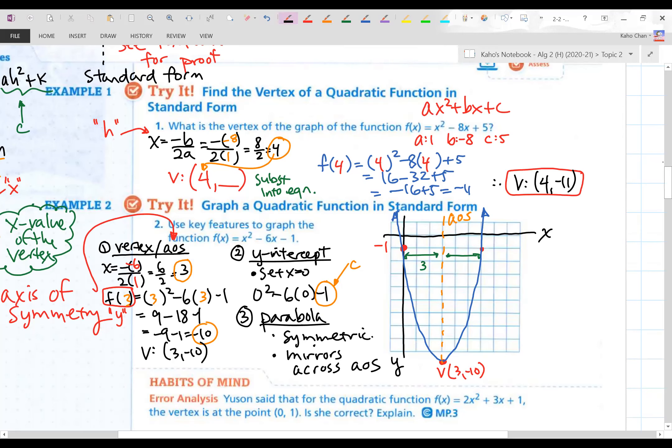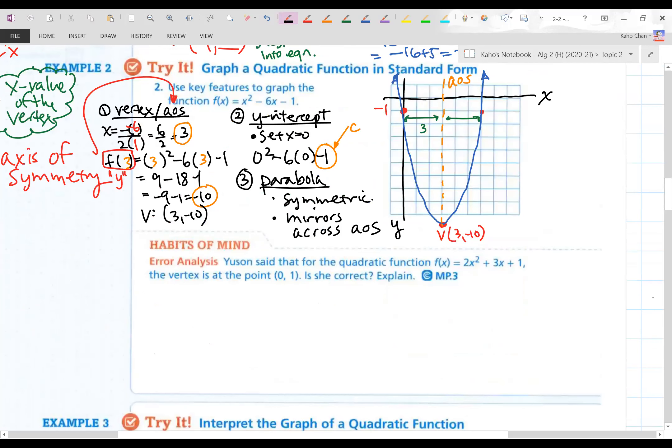Let's try number three. Did we answer the habits of mine here? You saw and said that for the quadratic function f of x equals 2x squared plus 3x plus 1, the vertex is at the point 0,1. Is she correct? Well, let's use our formula negative b over 2a and see what happens. Let's see if Yuson is correct. Identify a and b. a is 2, b is 3. Put those into the formula. Will I get a 0 for my x value? Nope. This is not equal to 0. I was looking for that. So the answer is no.